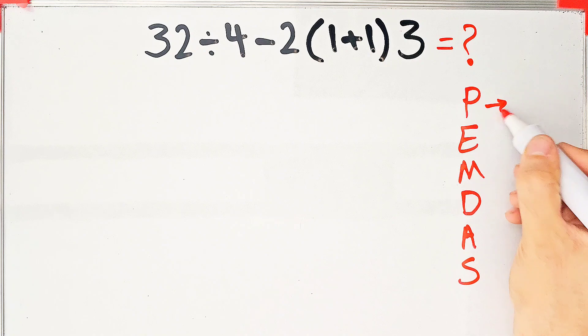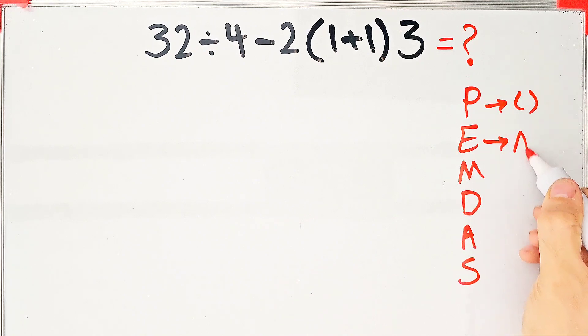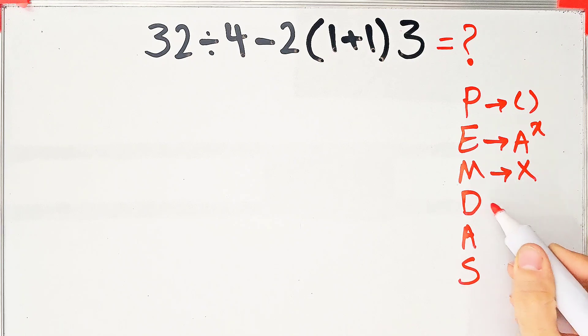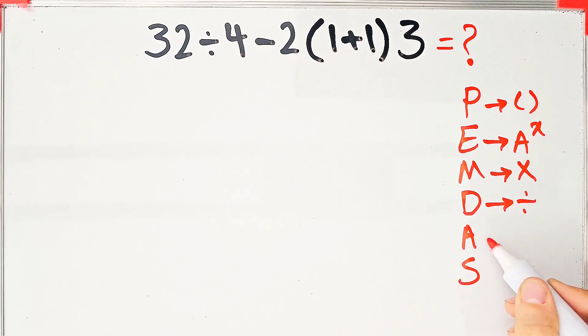In this rule, P stands for parentheses, E stands for exponent, M stands for multiplication, D stands for division, A stands for addition, and S stands for subtraction.